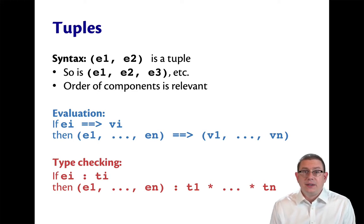Tuple syntax and semantics is even easier than records. e1, e2 inside of round parentheses is a tuple. So e1, e2, e3 - you can have as many comma-separated sub-expressions as you want.